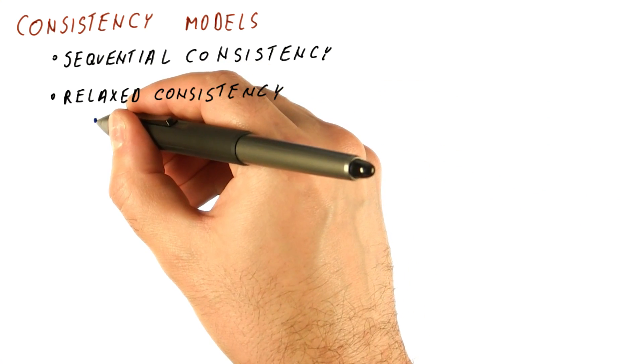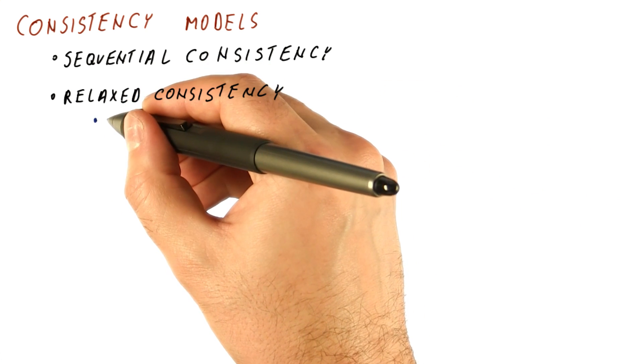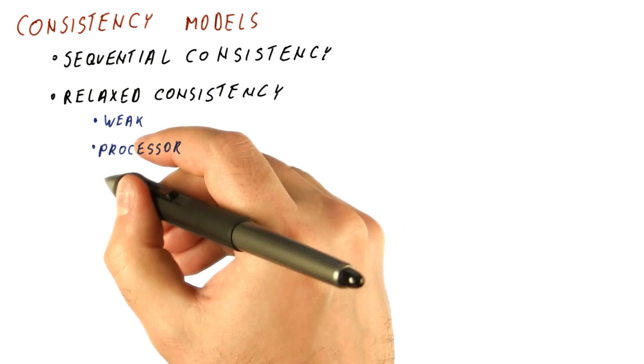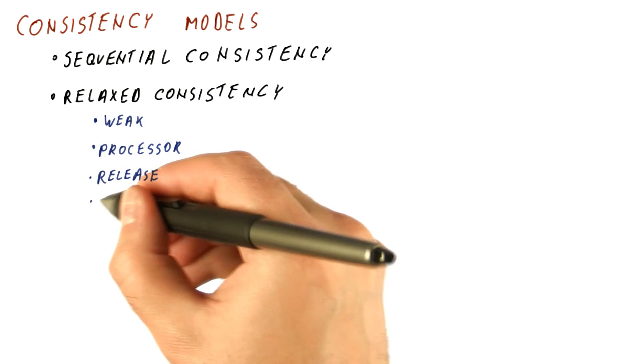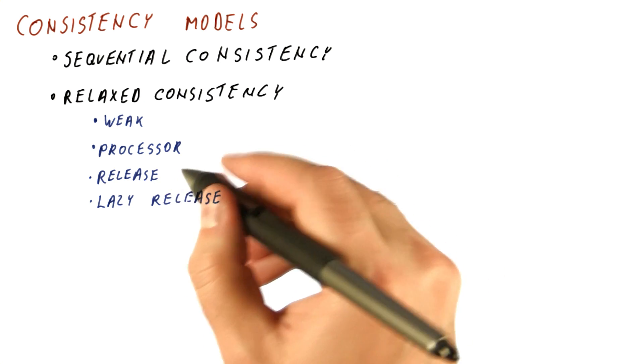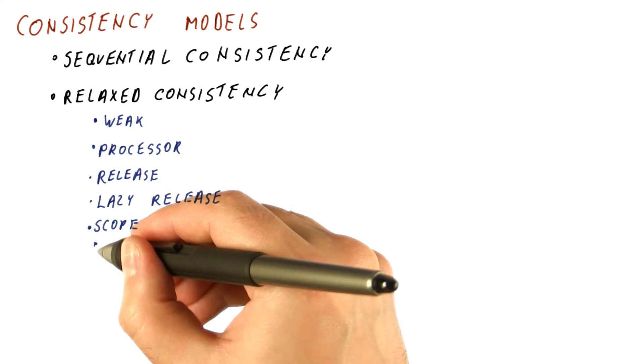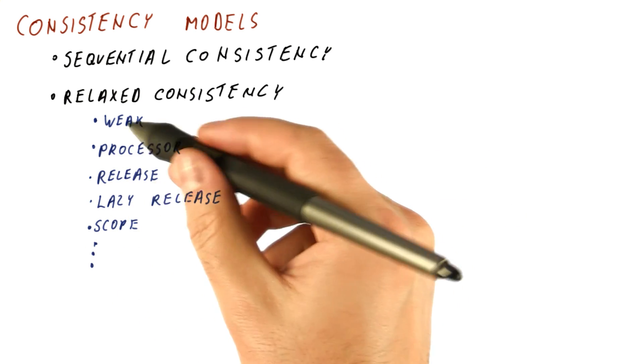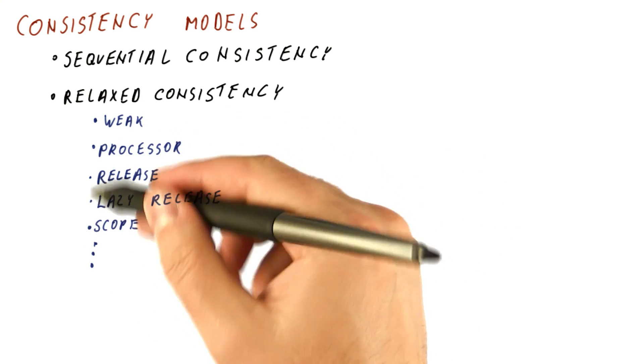And the models that have actually been proposed and sometimes used are called weak consistency, processor consistency, release consistency, lazy release consistency, scope consistency, et cetera. There are actually many, many relaxed consistency models, too many to actually explain here.